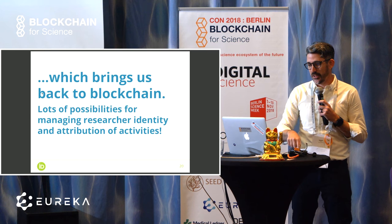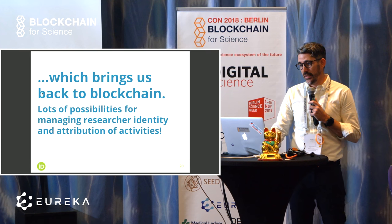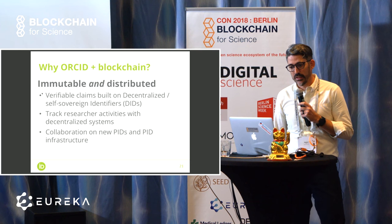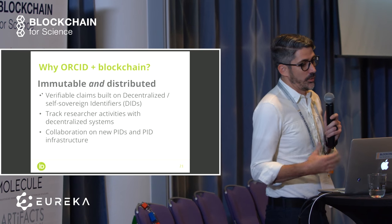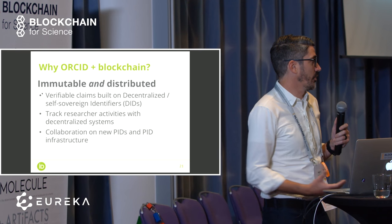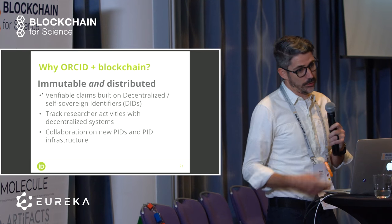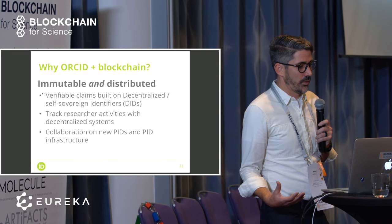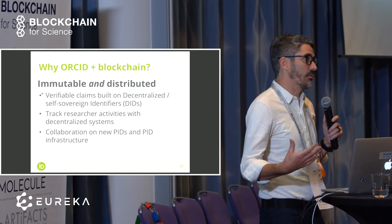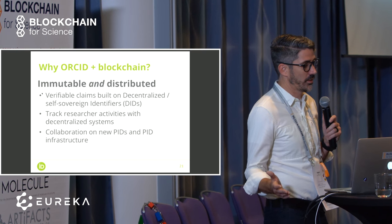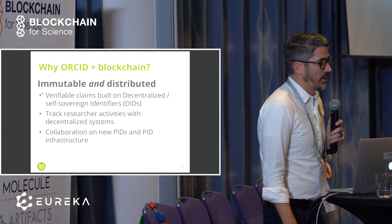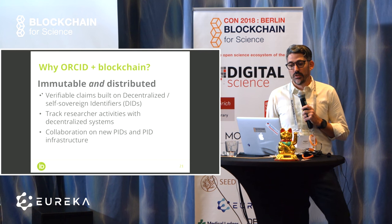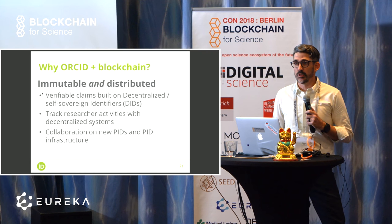Which brings us right back to blockchain. There's a lot of innovation going on and lots of possibilities for managing researcher identity and attribution of activities. Why ORCID plus blockchain? The value ORCID sees in it is it's immutable and distributed. When we're talking about connecting researchers to activities, those activities are everywhere and very distributed. Having distributed systems correctly attribute those things makes a lot of sense. We're really excited about the innovation we're seeing in verified claims built on decentralized self-sovereign identifiers. We also like initiatives around tracking researcher activities with decentralized systems, and we'd really like collaboration on new PIDs and PID infrastructure — some of those could be addressed best with blockchain technologies.